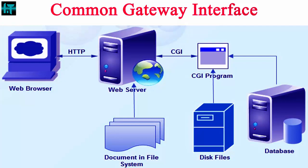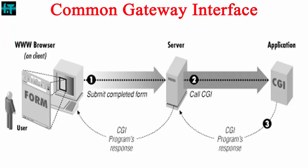Depending on the type of request from the browser, the web server either provides a document from its own document directory or executes a CGI program. The sequence of events for creating a dynamic HTML document through CGI scripting is as follows: Step one — a client makes an HTTP request by means of a URL, which is known as Uniform Resource Locator.